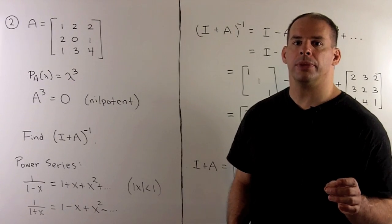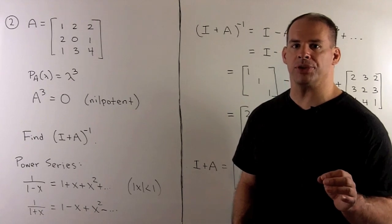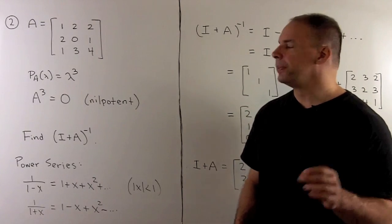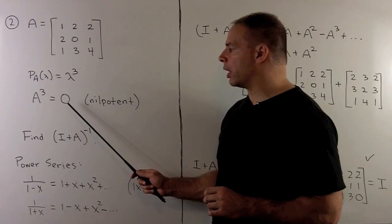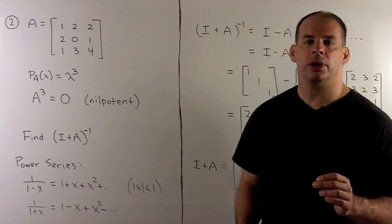For the next part, we want to find the inverse of I plus A using the Cayley-Hamilton theorem. We have A cubed equals zero. We'll take our inspiration from power series.